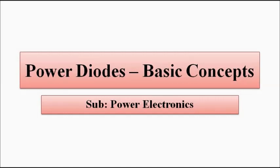In this video we are going to have a basic discussion related to one of the important power semiconductor devices, which is the power diode. Understanding the power diode is very important because the diode is the basic building block, and all other semiconductor devices are one way or another derived from diodes. If we understand the construction and working principle of the power diode, we can understand all other semiconductor devices used in power electronics easily.